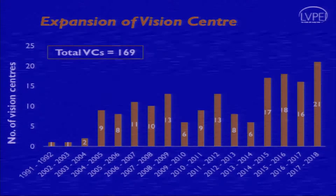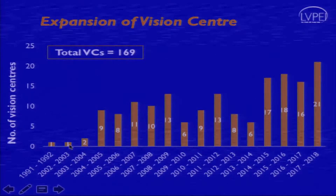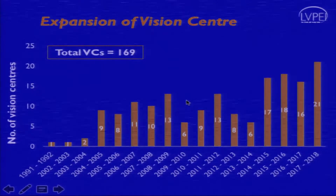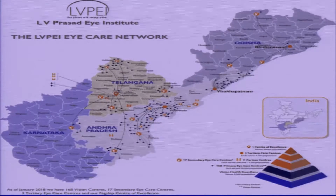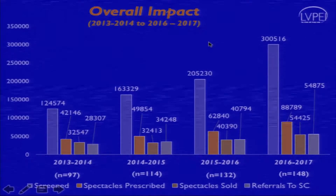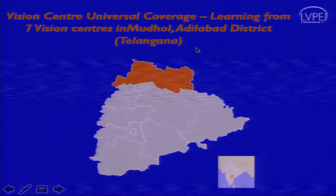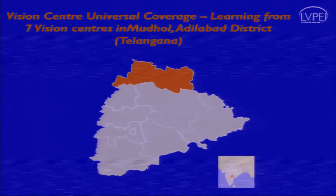Coming to performance, these are the numbers showing how vision centers have grown. The first vision center was started in 1991-92 in the city of Hyderabad. There was a big gap of nearly 10 years, and subsequently it leapfrogged from two or three to now 169 vision centers across the network, with 17 secondary centers. By the end of this year we will probably reach around 200 vision centers. Last year we saw almost 300,000 outpatients at these vision centers. In one area where we had vision centers for almost 10 years, we examined how much population we had covered.